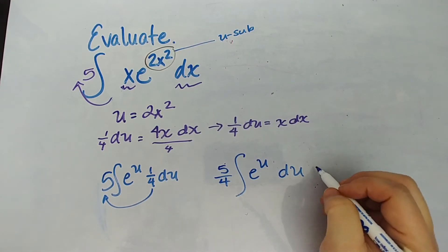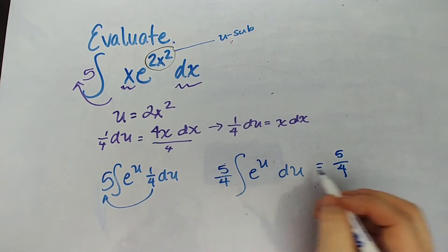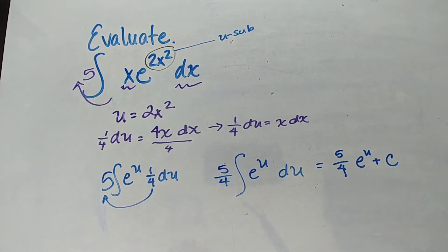And I think I can go this way. So five-fourths times now we're going to integrate this e to the u plus c or k or whatever your teacher has you do. Now was there a u in the problem when we started?